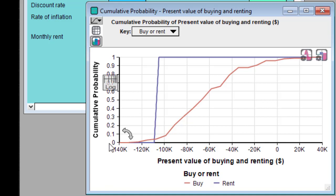The vertical axis is the probability that the true value is less than or equal to the corresponding value on the horizontal axis. So there's a 60% probability that the present value of buying would be less than negative 60,000. Since negative means a cost, that means there's a 60% probability that the true cost would be more than $60,000.